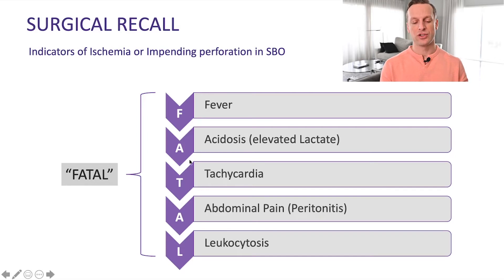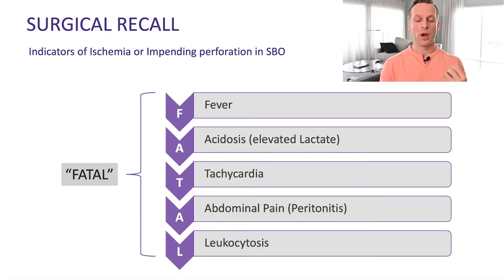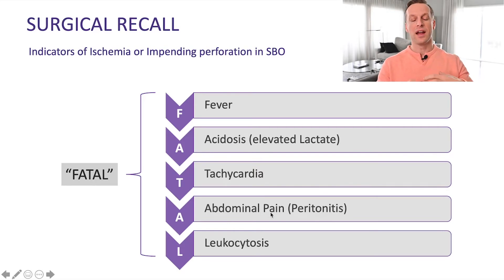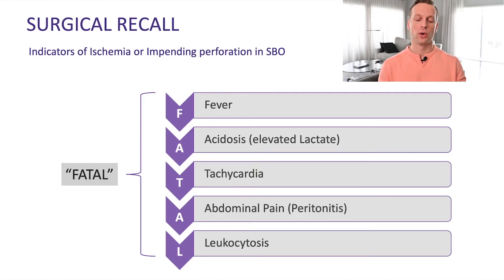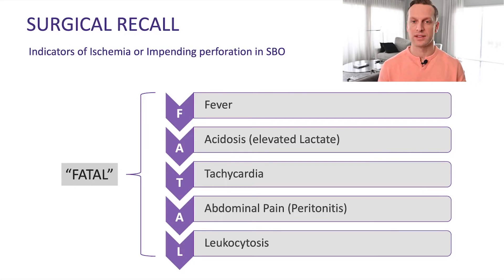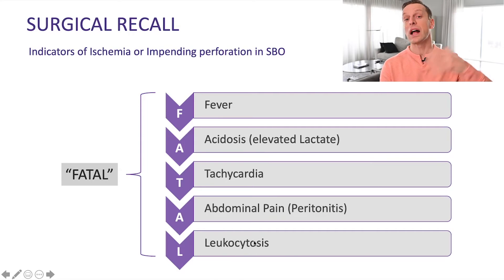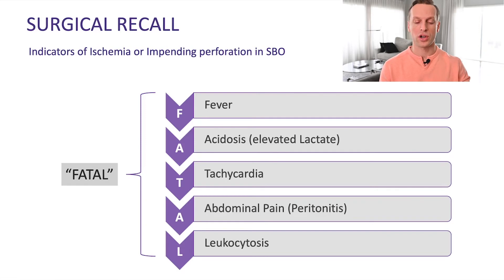Specifically for the acidosis, we're going to want a lactate on our blood work. For the abdominal pain component, recognize that we're really talking about peritonitis here — because the typical patient with a small bowel obstruction will have some abdominal pain, that alone is not concerning, but if they have peritonitis, rebound tenderness, or percussion tenderness, those features are considered concerning. We also want to look at the white cell count because if it's elevated, that's a serious concern in someone with a small bowel obstruction.